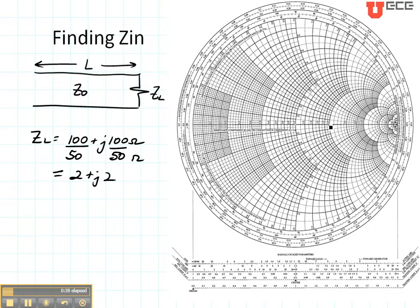Let's plot it. Here's the circle with the real part of 2 and here is the imaginary circle with the real part plus 2. So right there is my load impedance.